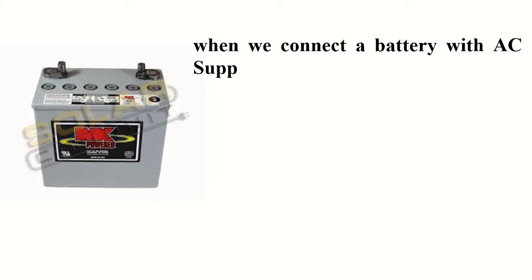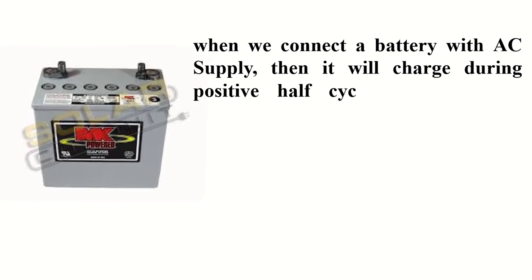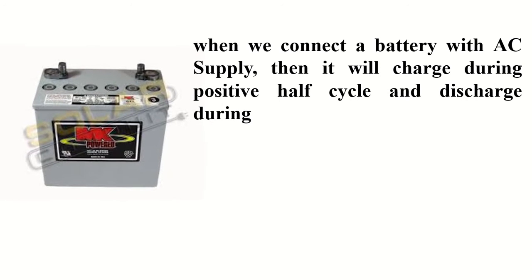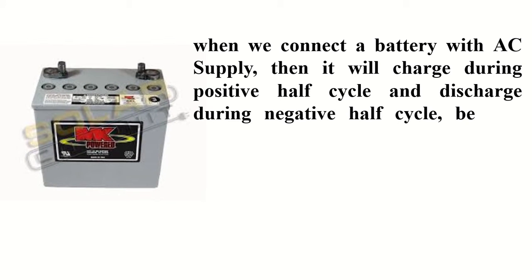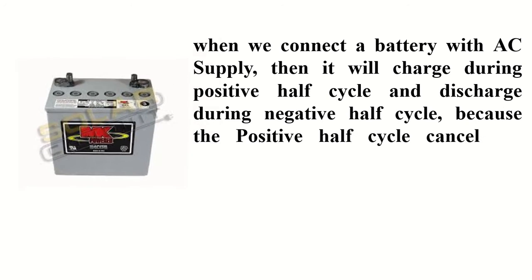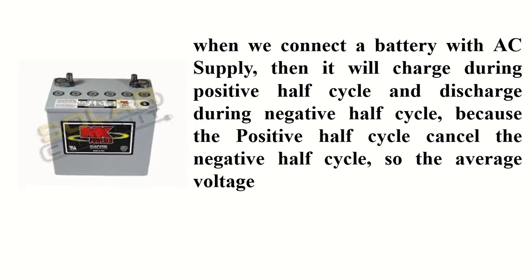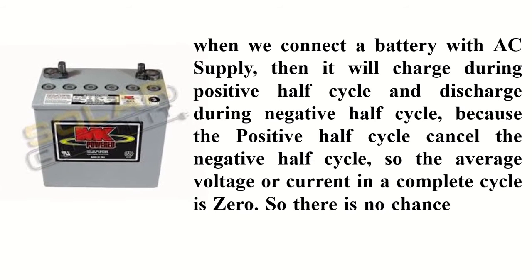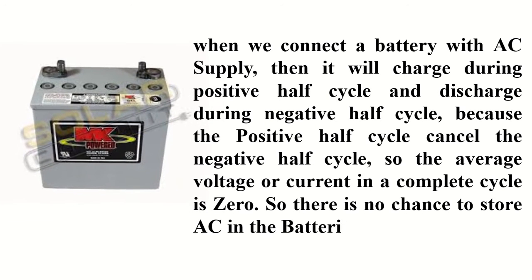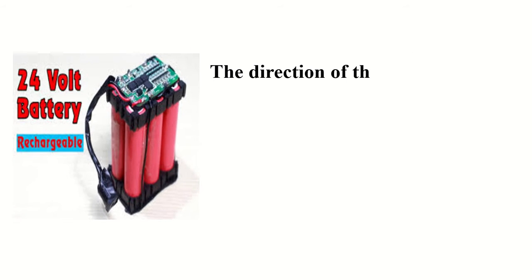When we connect a battery with an AC supply, it will charge during the positive half cycle and discharge during the negative half cycle. Because the positive half cycle cancels the negative half cycle, the average voltage or current in a complete cycle is zero. So there is no chance to store AC in batteries.